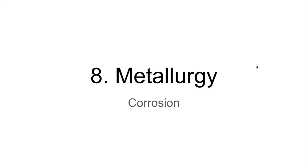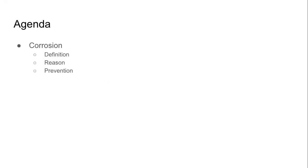After we have understood what metals are, how they are different from non-metals, where they are found, and how we get metals for our use, let us understand the last topic which is called corrosion. Our session today will cover only corrosion — that's the last part of the chapter, the last three pages, starting on page number 106 and ending on page number 108.